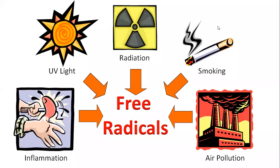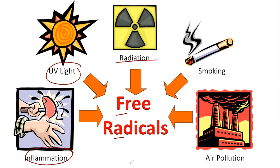Let's discuss how free radicals are formed. Whenever our body reacts with the environment unintentionally, it will lead to generation of free radicals. If inflammation happens in our body, it will create free radicals. In case of exposure to sunlight, it also creates free radicals. Whenever we are exposed to any kind of radiation, this leads to formation of free radicals. Smoking and air pollution lead to immense generation of free radicals, and eventually over time this can harm the lungs and cause fibrosis.